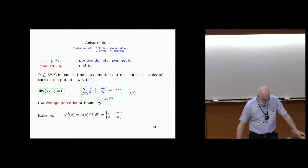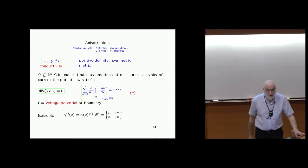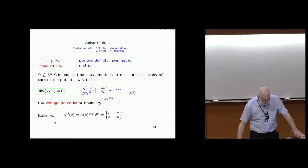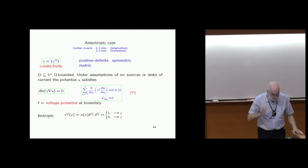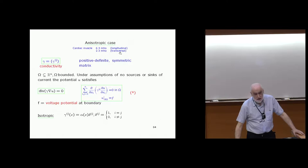The problem is set up in the same way. You have a domain in Euclidean space with no sources or sinks of current. The potential satisfies the same equation — this is Ohm's law in divergence form. F is the voltage potential at the boundary. The isotropic case we discussed in the last three lectures corresponds to the case where this matrix is diagonal with all diagonal elements the same, so conductivity is the same in every direction.